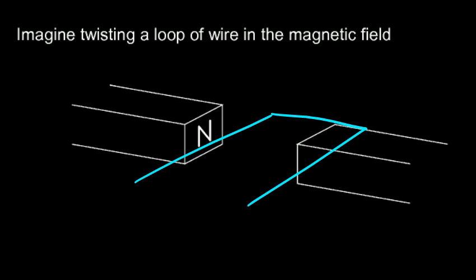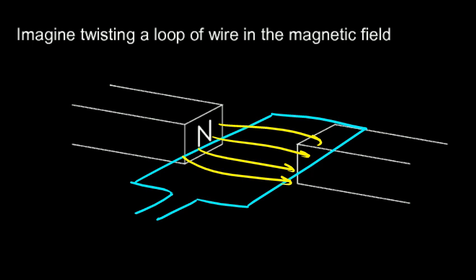And this wire is in this magnetic field. These field lines are running from north to south. Now imagine twisting the loop of wire, so we're going to take it with our hands or with some device and physically rotate it.